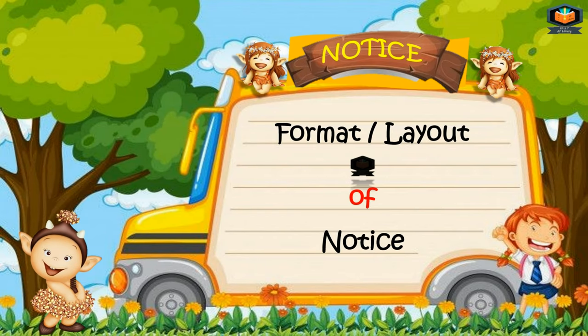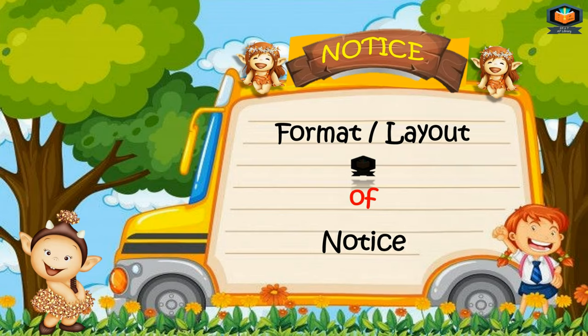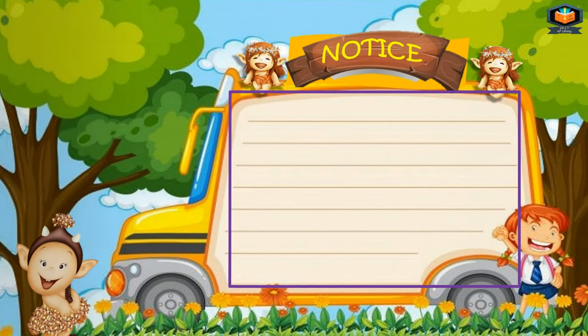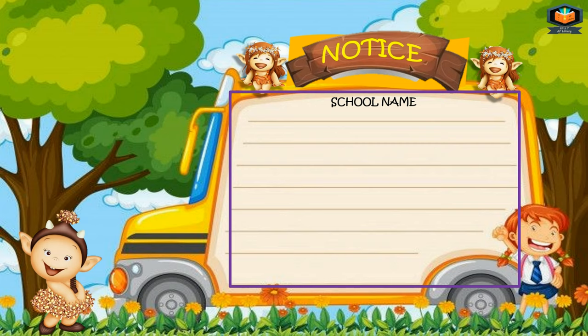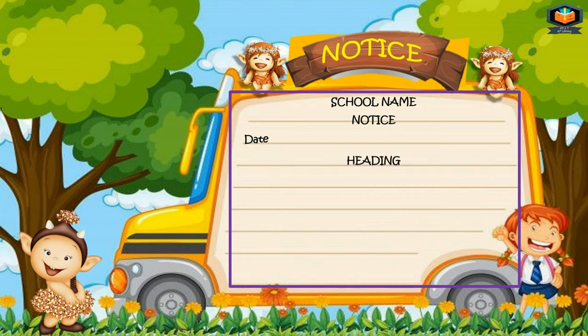Format or layout of a notice: In the very first line we write the school name with city. In the next line we write NOTICE — both of these in capital letters only. In the next line on the left side we write the date, and in the next line the heading in capitals and in the center.